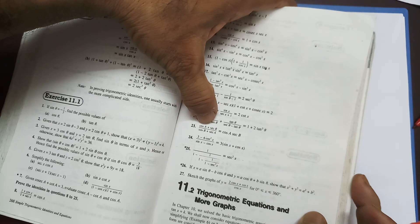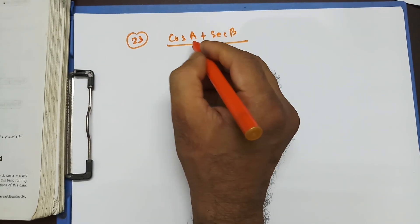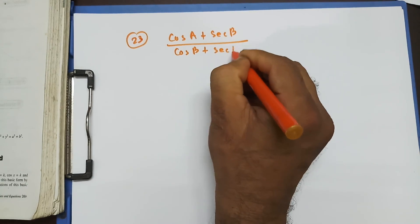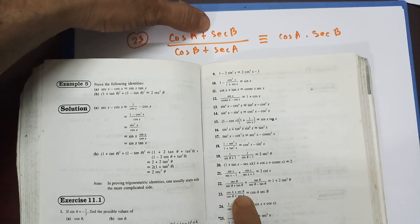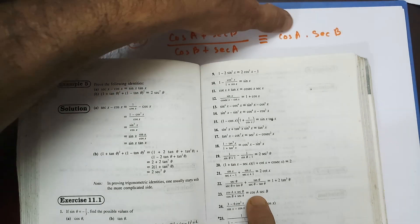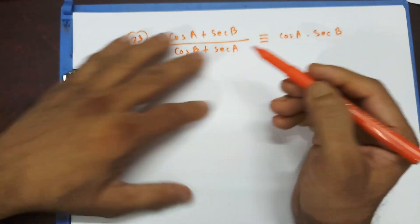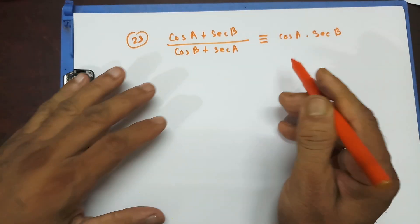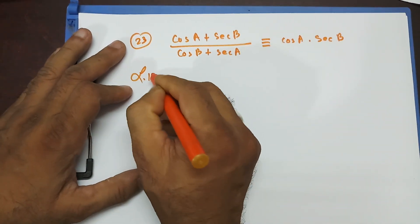Let's do question 23. It says: (cos A + sec B) over (cos B + sec A) is identical to cos A · sec B. In all my videos of this series, I always recheck that I've copied the question correctly — the best way to avoid copying mistakes, because you'll lose marks if you copy wrong.